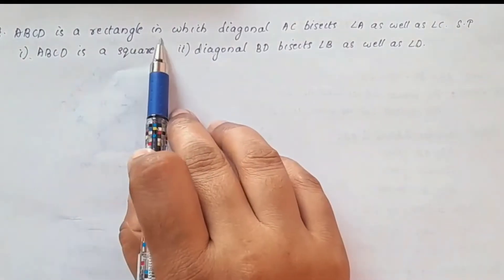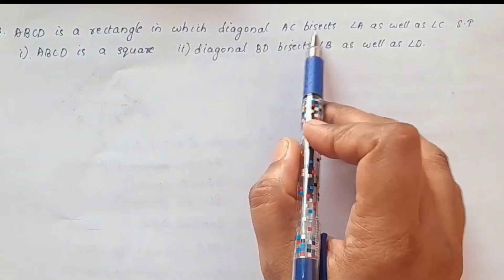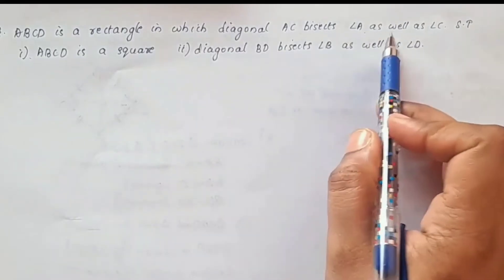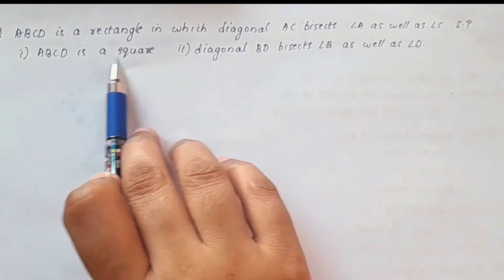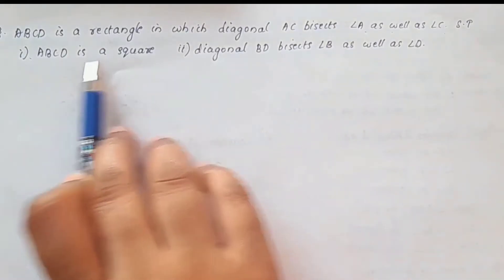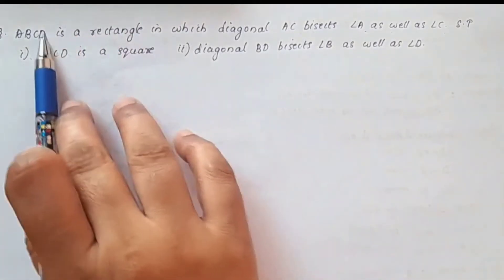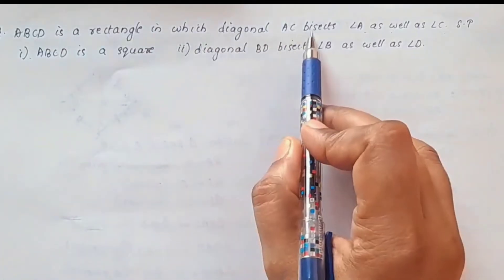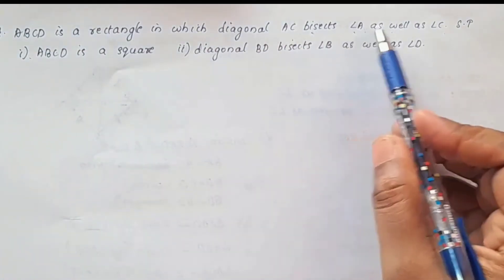ABCD is a rectangle in which diagonal AC bisects angle A as well as angle C. Show that ABCD is a square.